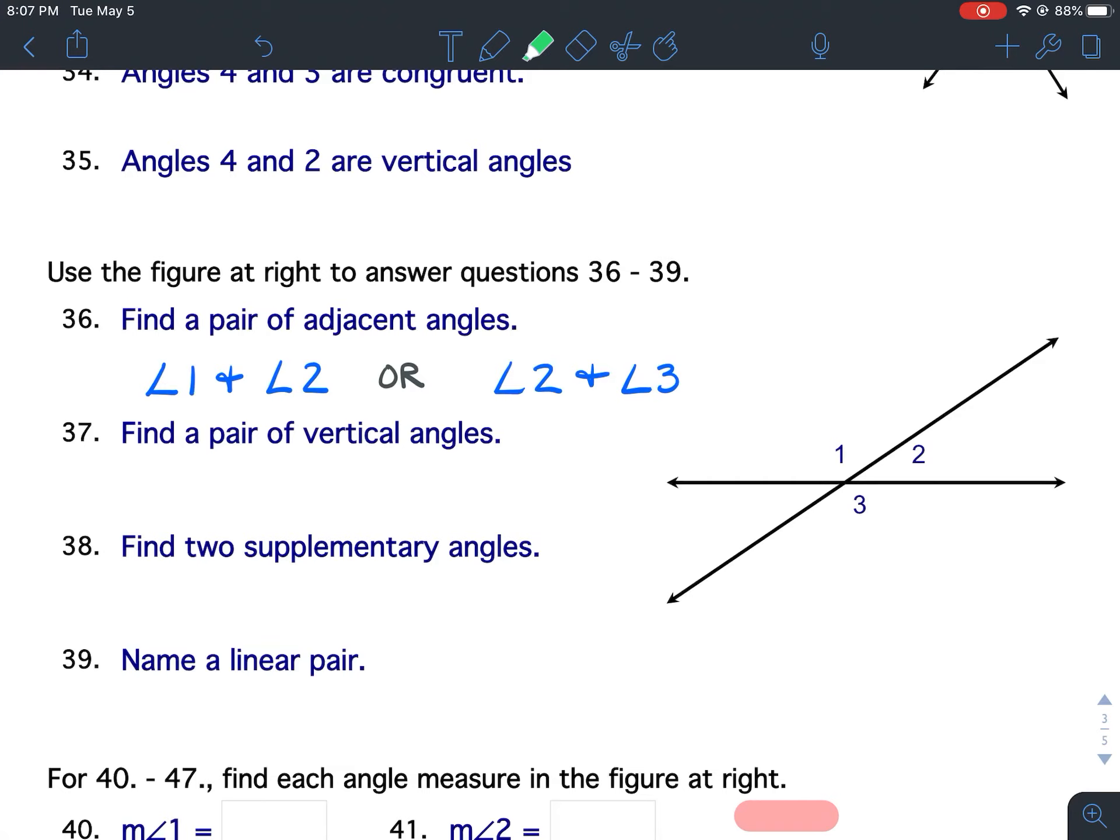For 37, find the pair of vertical angles. Is it 1 and 2, is it 2 and 3, or is it 1 and 3? Again, which pair are vertical angles? 1 and 2, 2 and 3, or 1 and 3? Write that down.